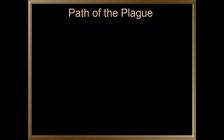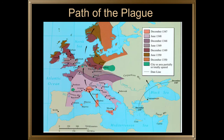The path of the plague — you can see it here. It began in Messina in 1347 and then spread northward. Messina was the point at which it really entered Western Europe.